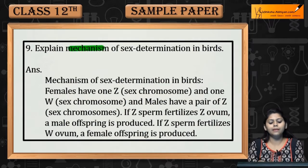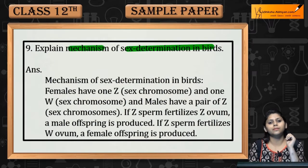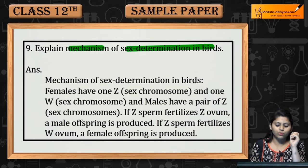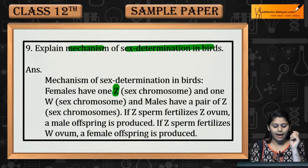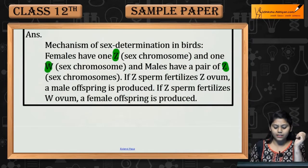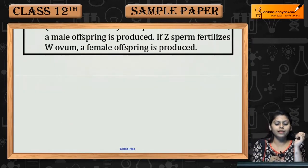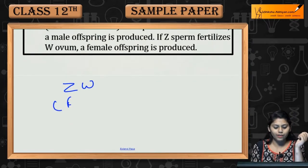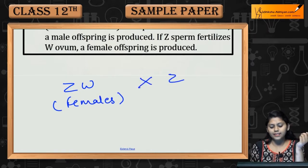Question number nine: explain the mechanism of sex determination in birds. Birds ke sex chromosomes — female mein hain Z and W. In case of male, it is a pair of Z. That means females of birds are heterozygous — ZW is for females and ZZ is for male.